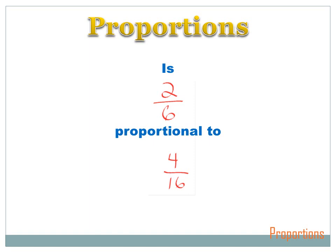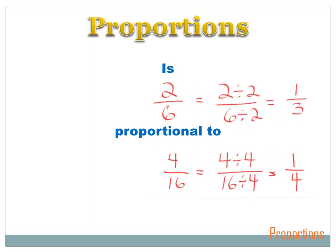How about these fractions — are they proportional? Two over six and four over sixteen. I reduce two over six by dividing both top and bottom by two, and it reduces to one over three. Now I reduce four over sixteen by dividing top and bottom by four: I get one over four. One over three doesn't equal one over four, so two over six is not proportional to four over sixteen.